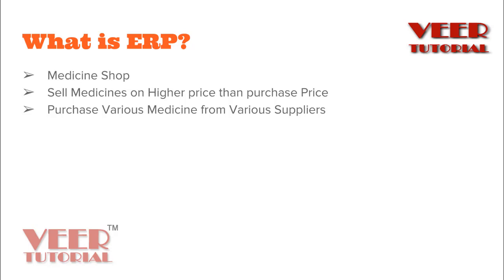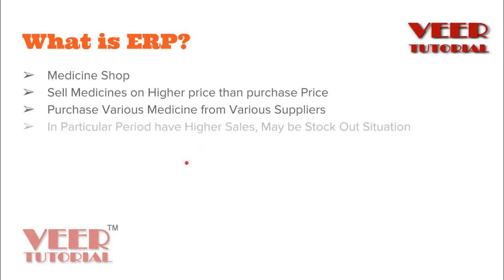We purchase various types of medicines from various suppliers, so we need their contact details, the rates, and all information on record. So we maintain a register, or if we have a computer we use accounting software. We enter all the transactions and get reports. After a few months, we got good business because we are providing good medicines at lower prices compared to other medicine shops.